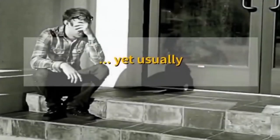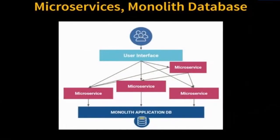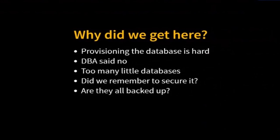But usually when we start talking about microservices and in particular databases, we end up with this: we've refactored our application into lots of microservices, but we still have one big monolithic database. I've been the person who architects this way. Why do we do that? Probably the most frequent reason is because the DBA said no. Unlike microservices, the way we deploy and migrate a database is very different. Users get a little bit distraught when we just pave over everything and replace it with a new copy like we do with microservices.